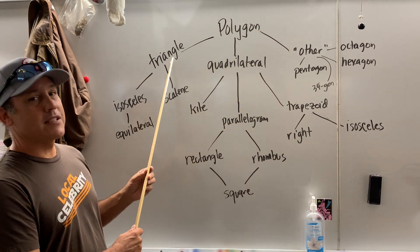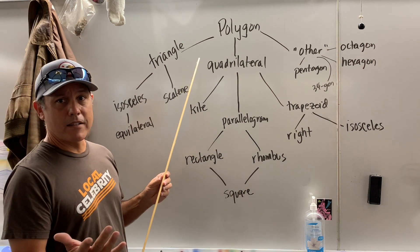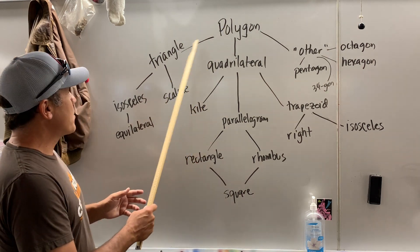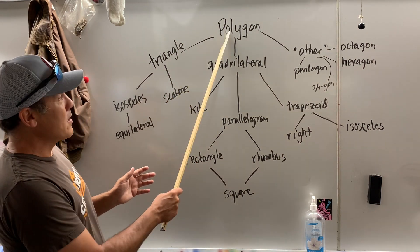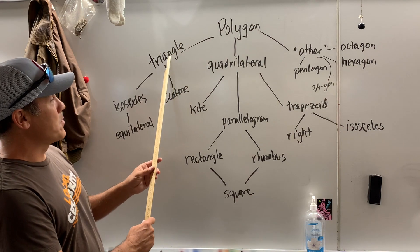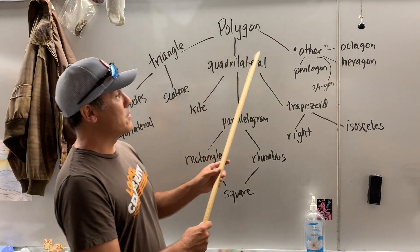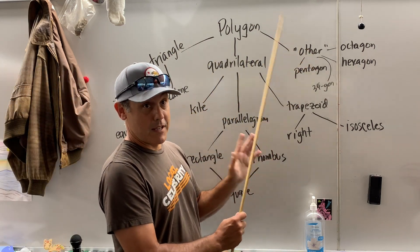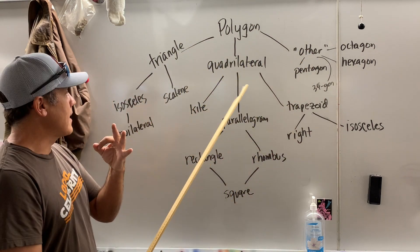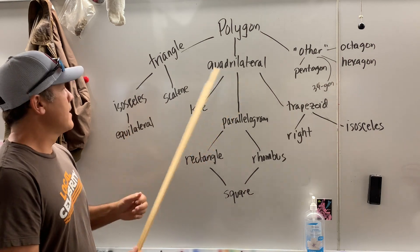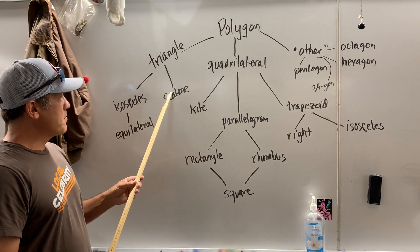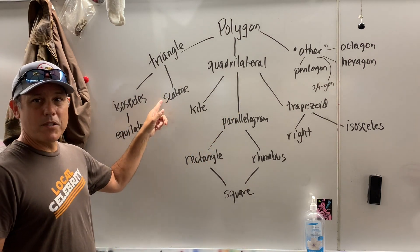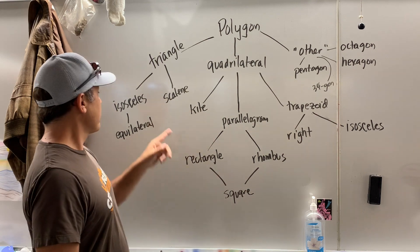So if it has three sides, we call it a triangle. The offspring of a polygon are a triangle, quadrilateral, and other. The triangle has three sides — you already know that. There are special triangles called a scalene, which means none of the sides are equal.